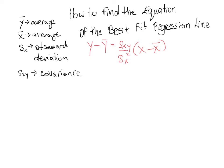Now that we know how to calculate these values, we're going to use the values already calculated in a previous video. The average of y is 4.21, the average of x is 27.97, the standard deviation of x is 3.76, and the covariance is negative 2.15.